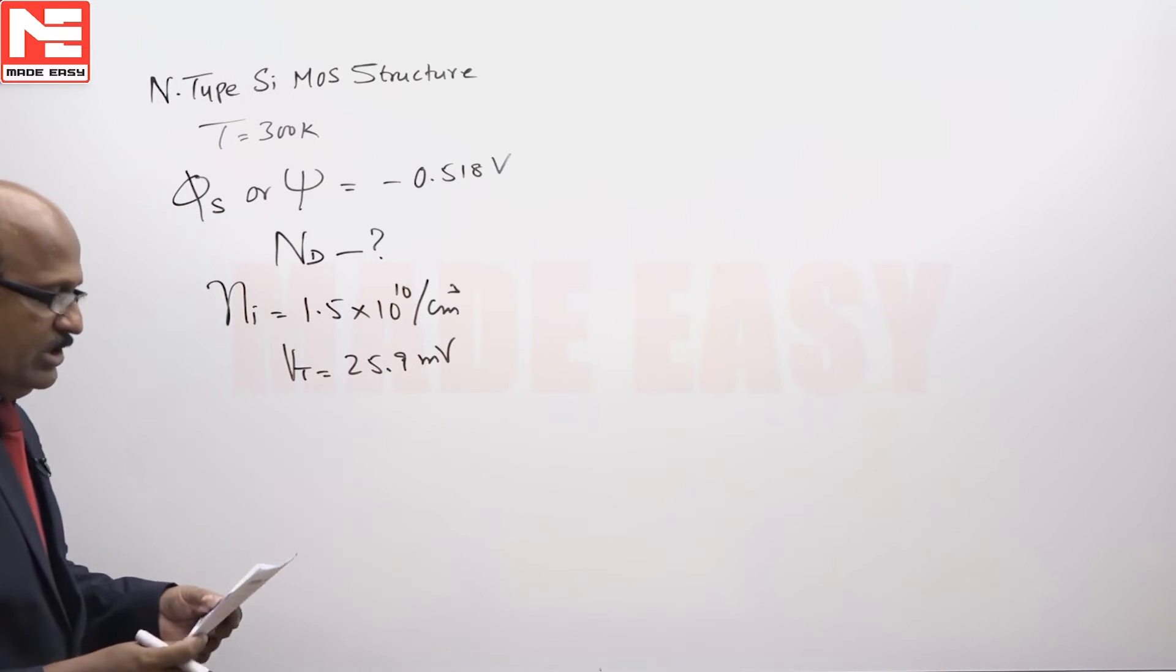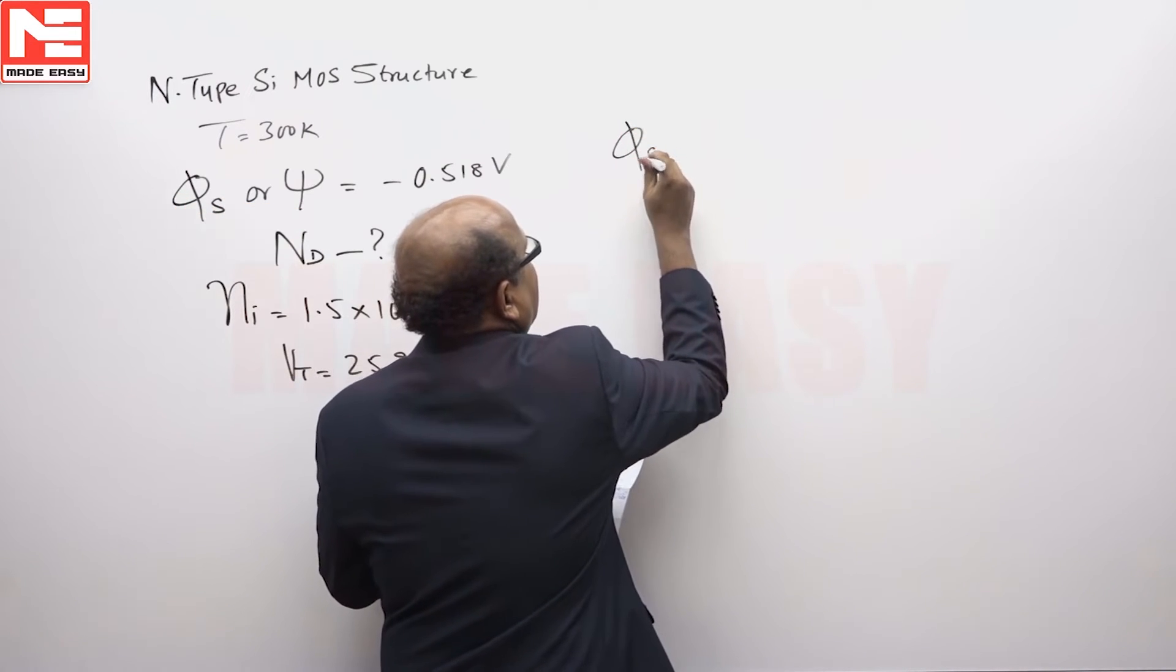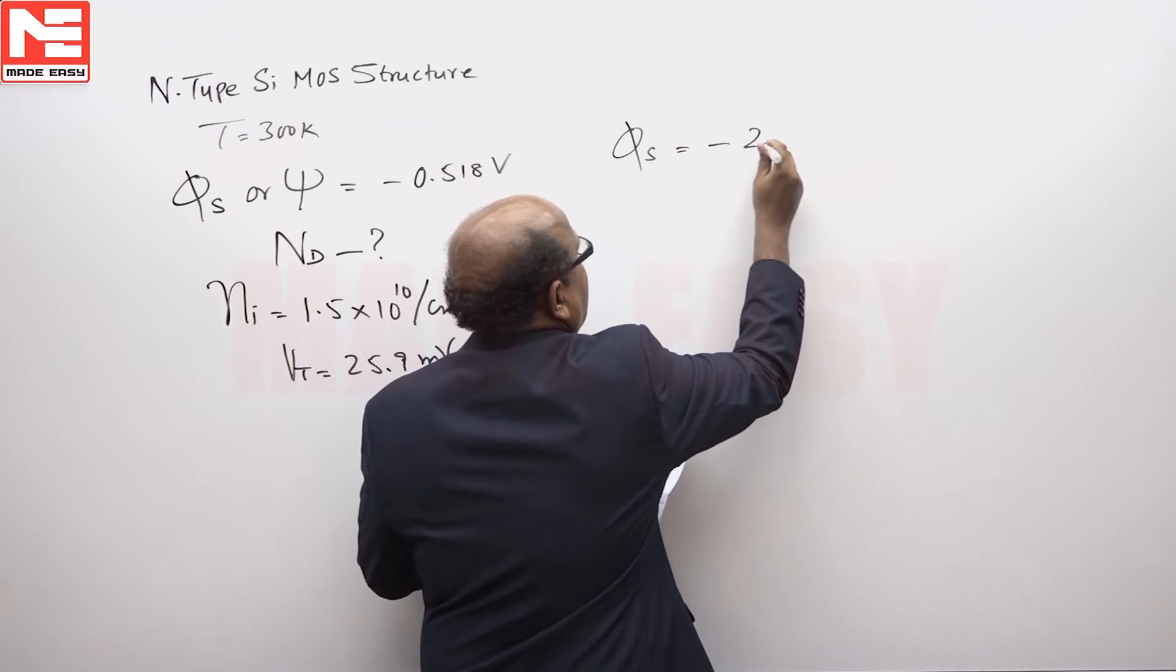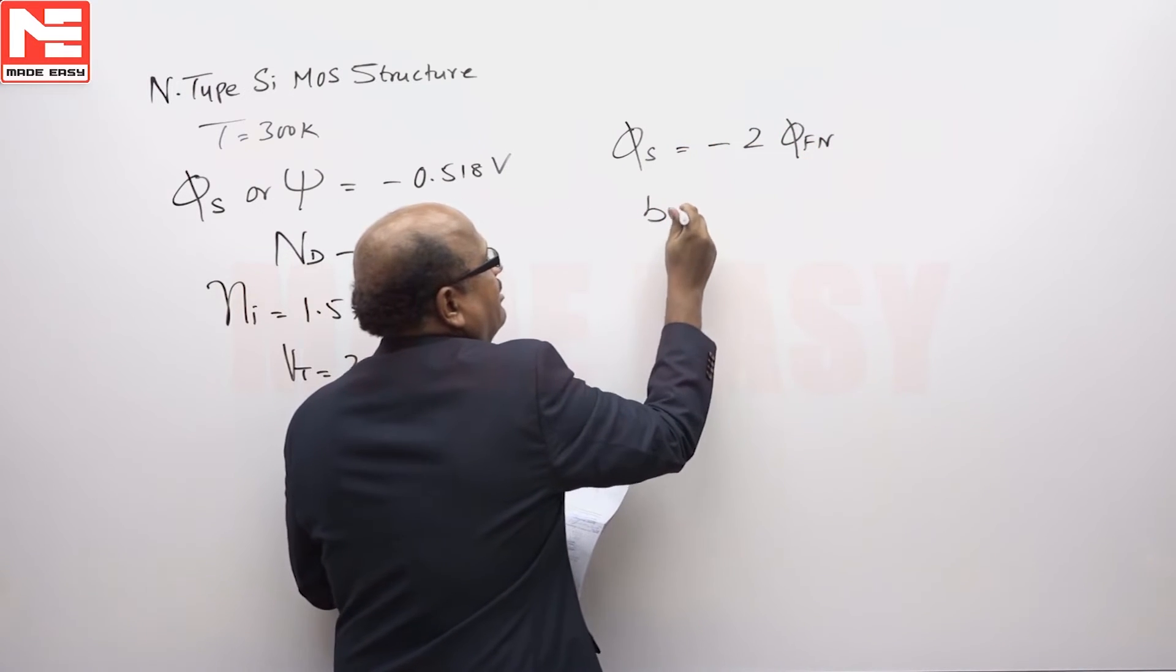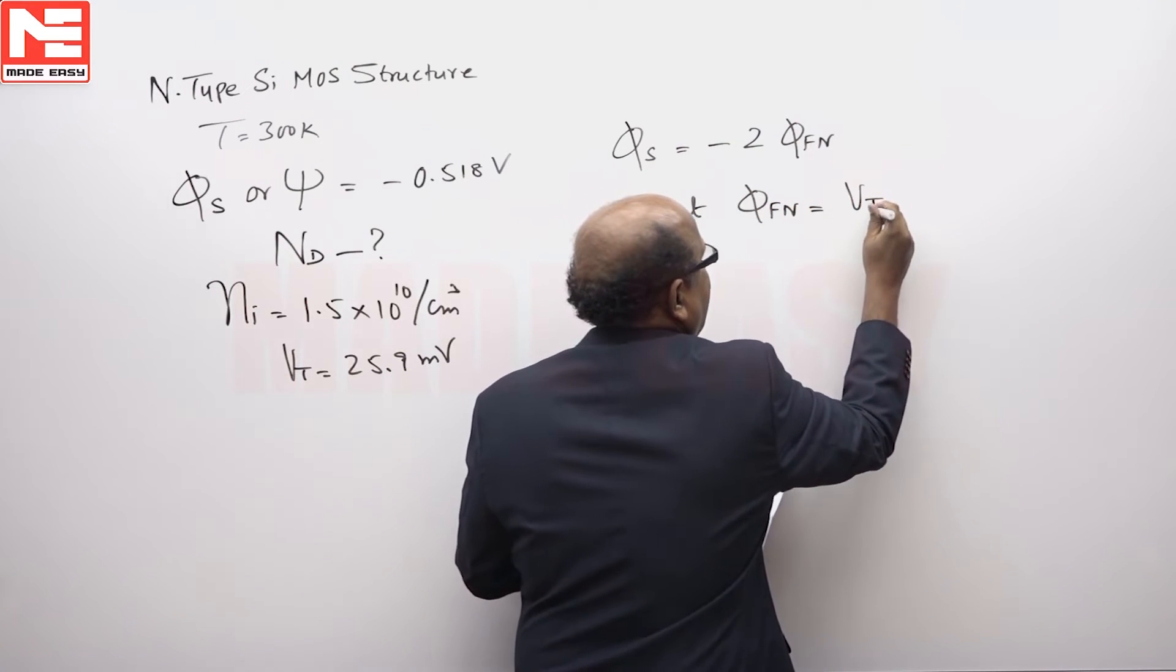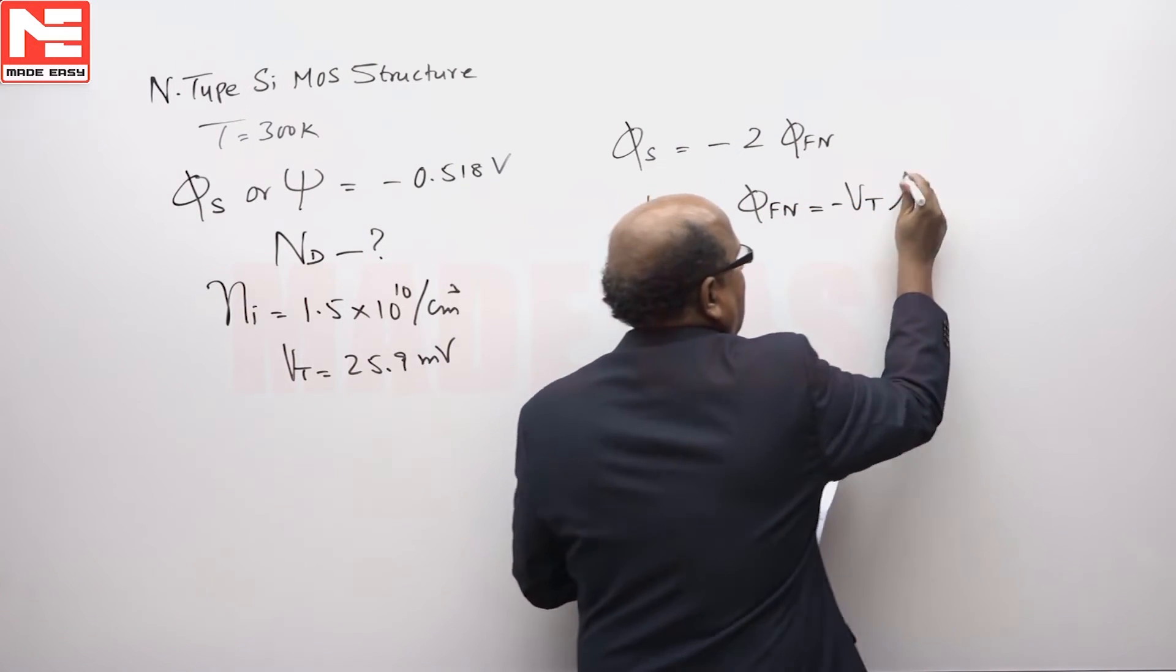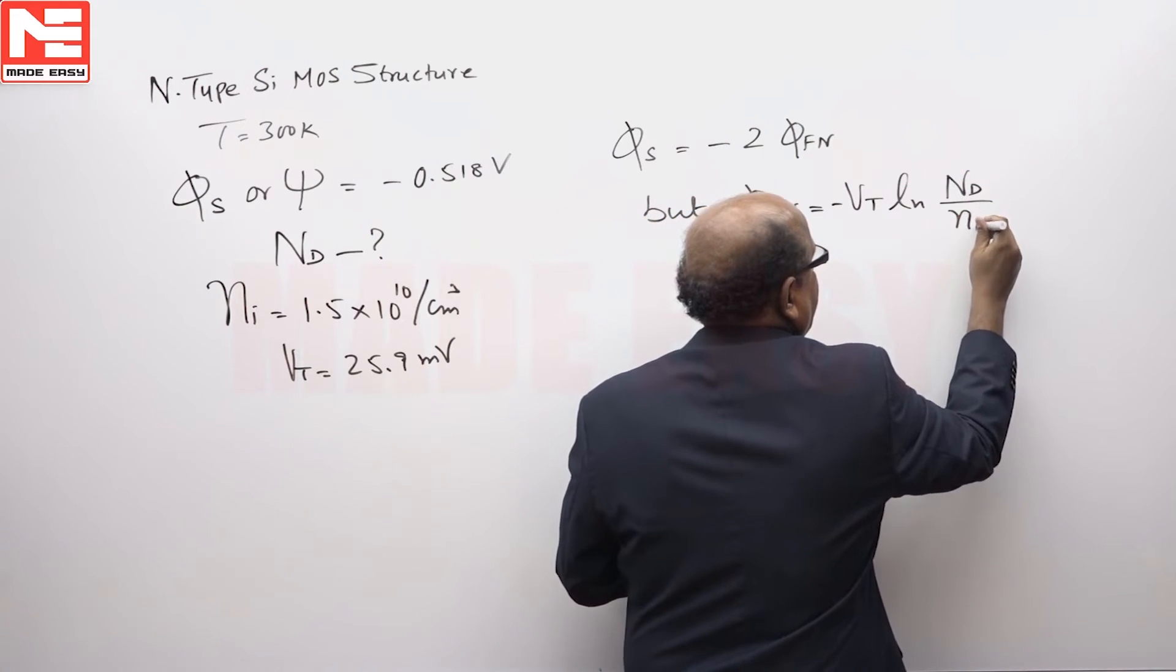Let us now analyze. The surface potential phi_s will be equal to minus 2 phi_fn. But what is phi_fn? That is equal to V_t with the minus sign, natural log of N_d by n_i, in volts.